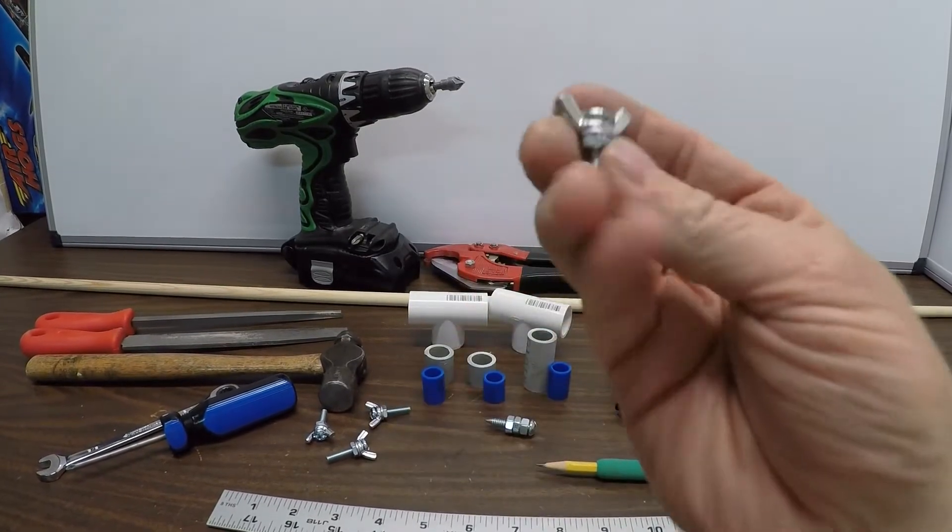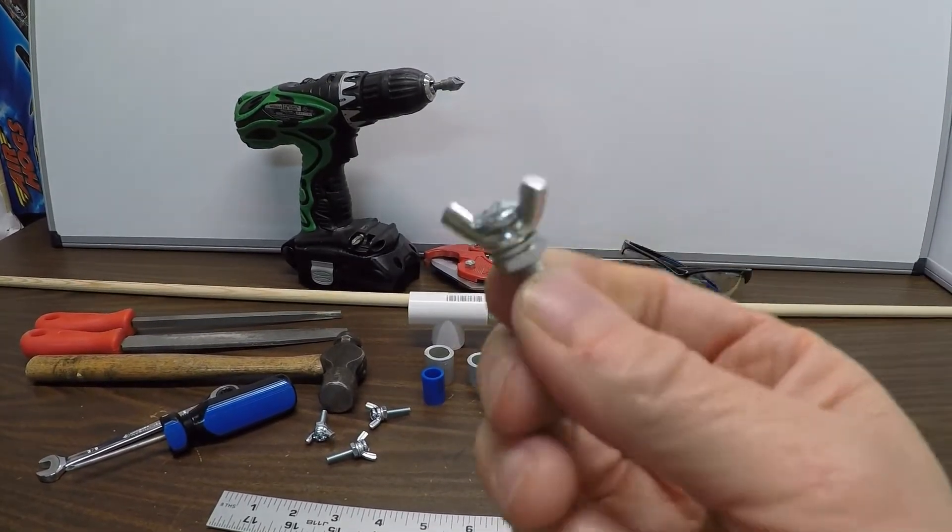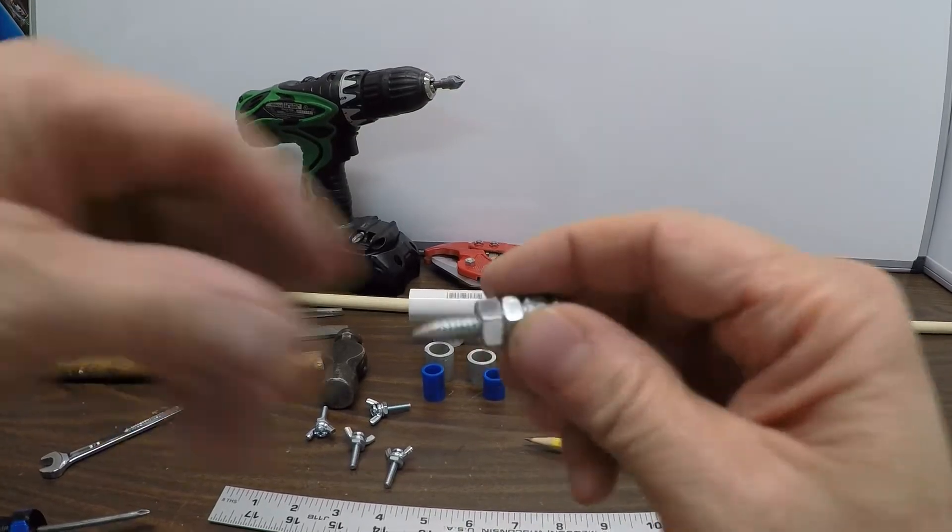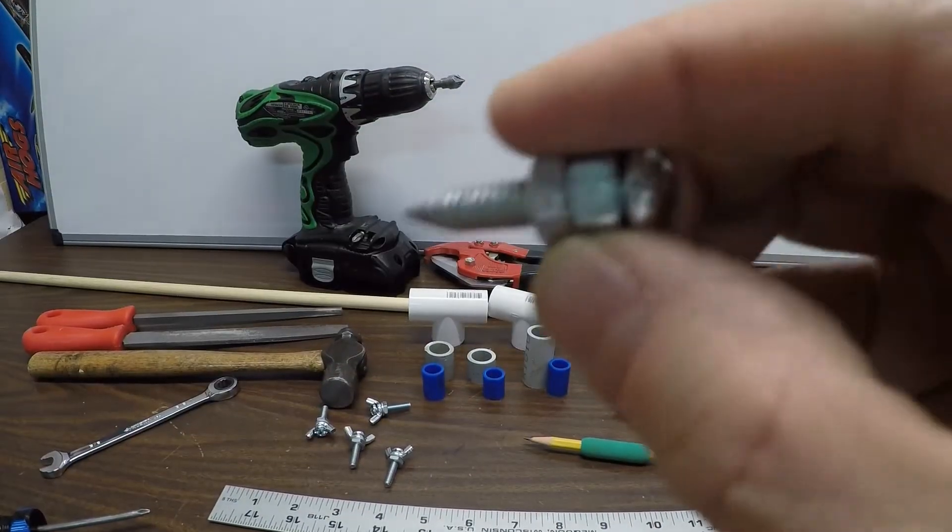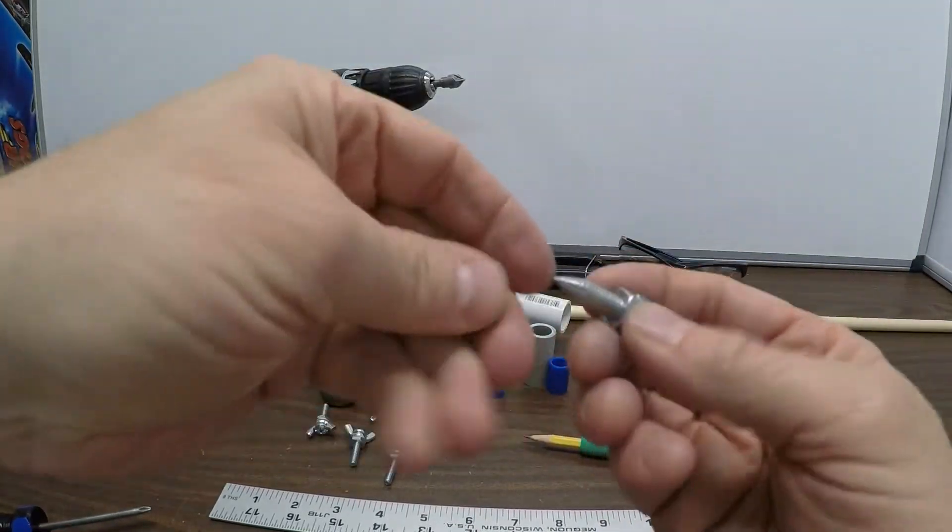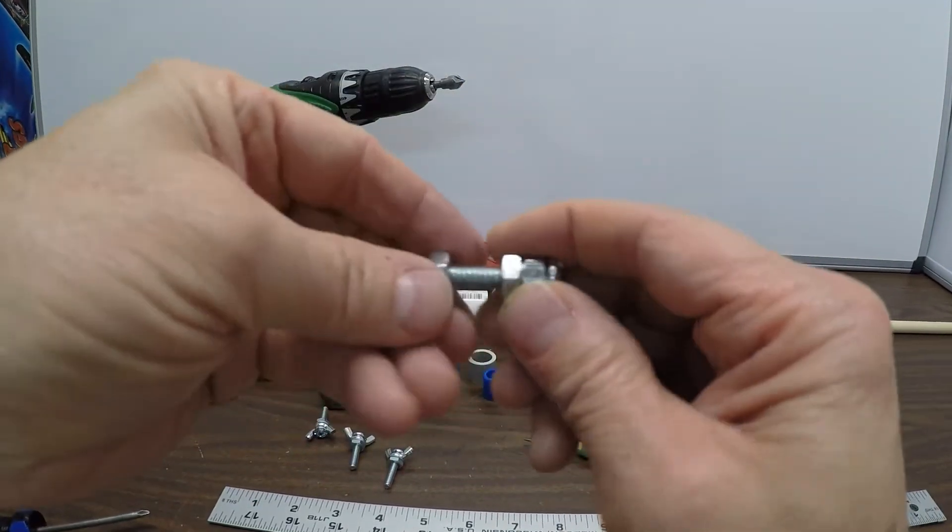I've come up with some of these what I'm calling butterfly screws. This is just a quarter inch. I think it's an inch and a quarter screw. And what I've done is sharpened it to a point and that will be my pivot point.